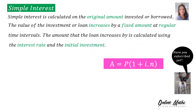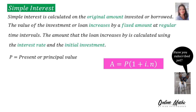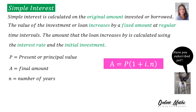The formula you will use for simple interest is: A = P(1 + i × n), where P is the present or principal value, A is the final amount, n is the number of years, and i is the interest rate. Remember, i = r divided by 100.